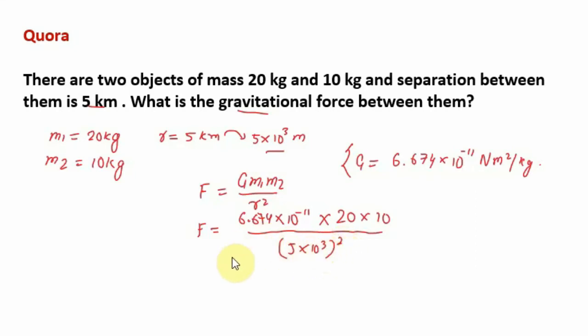You will get 6.674 × 10⁻¹¹ × 200, which is divided by 5² (that is 25) × 10³ squared (that is 10⁶).